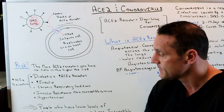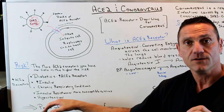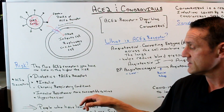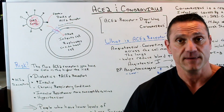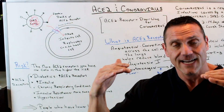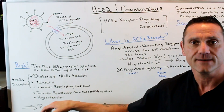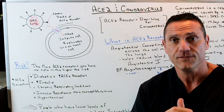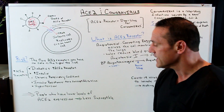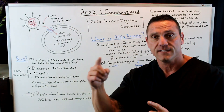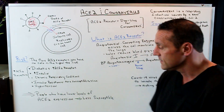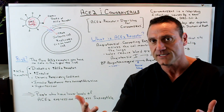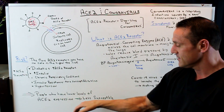People with insulin resistance — not necessarily type 2 diabetics, but more insulin resistant — are more susceptible to viral infections because they're constantly taxing their immune system. People with hypertension are also more susceptible to COVID because of the receptors. However, just because you have these receptors does not mean you're going to get COVID. People with lower levels of ACE2 expression — you may have all these receptors, but if your expression is lower, you're less susceptible.